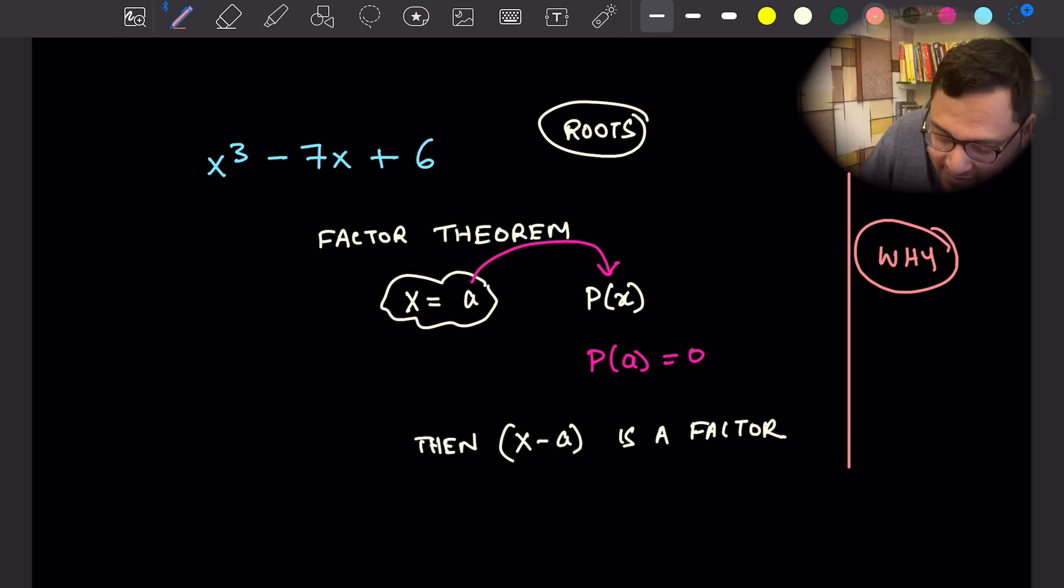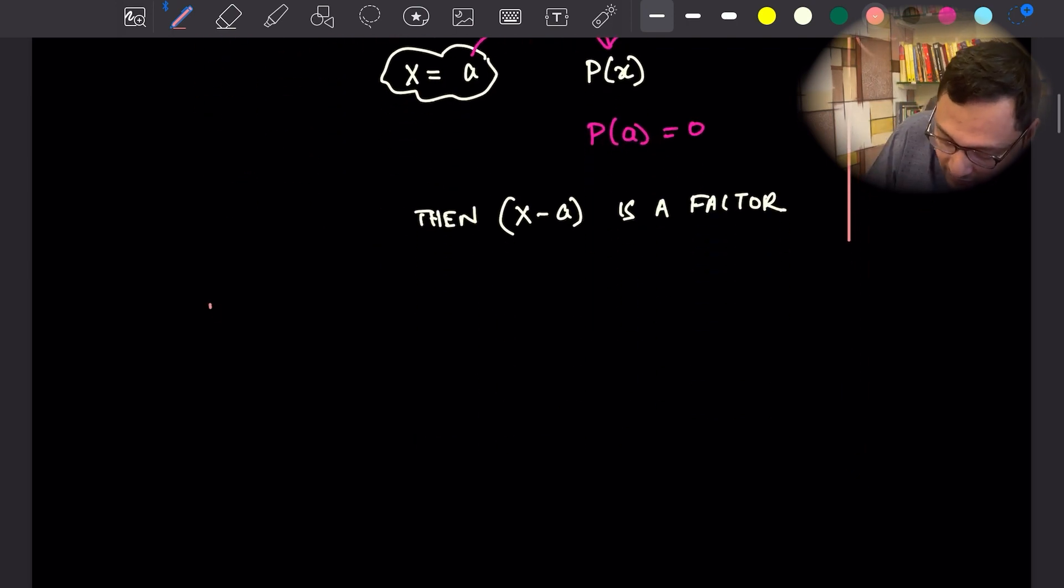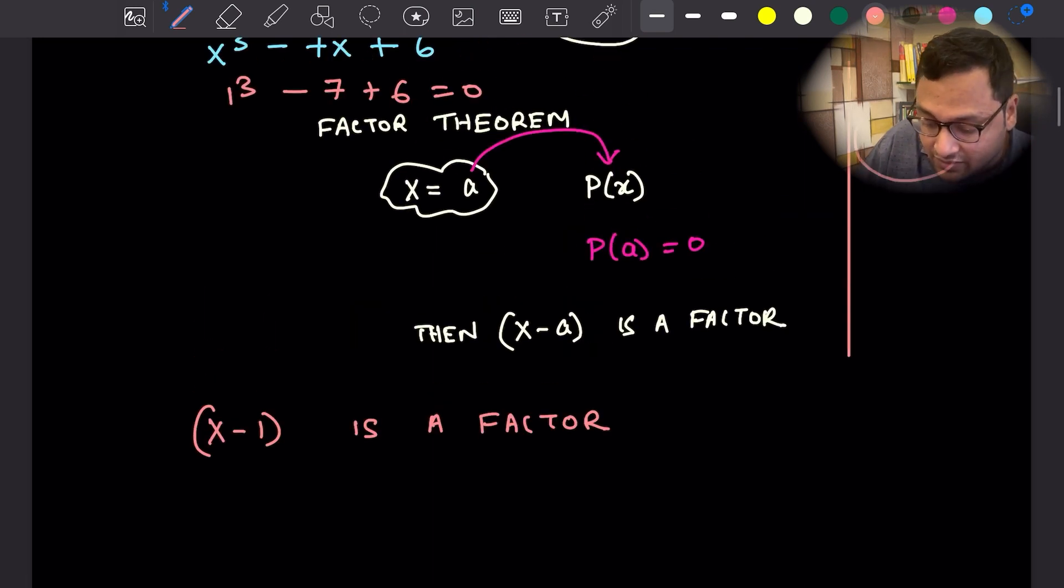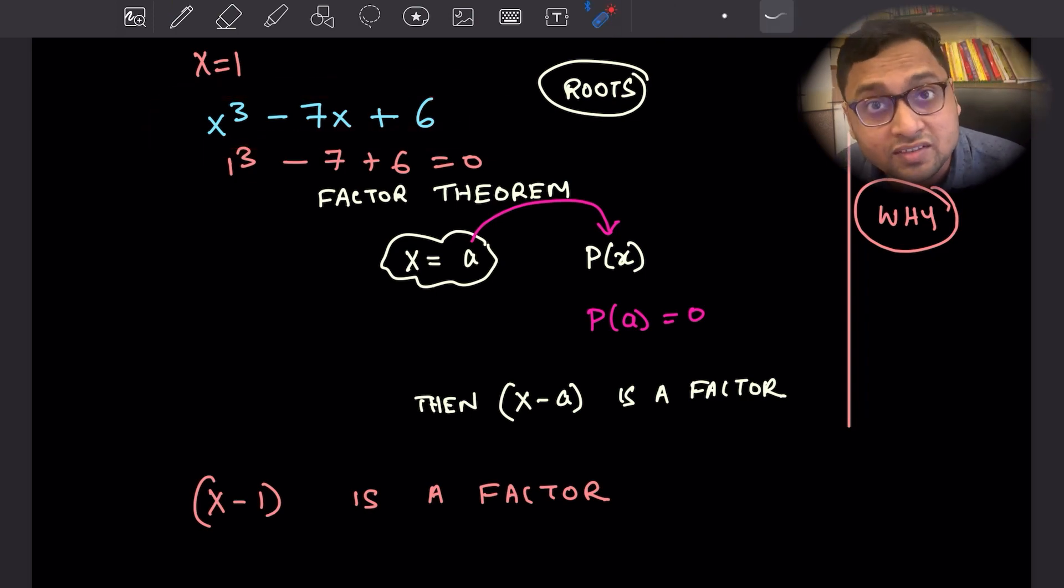We notice that if I plug in x equals to one, we have one cube minus seven plus six, which is zero, which immediately tells me x minus one is a factor of this particular expression.